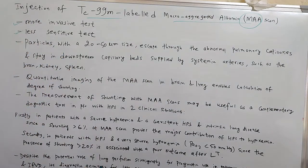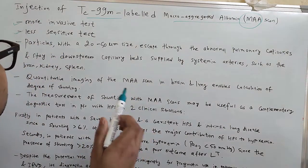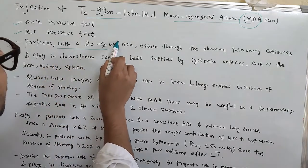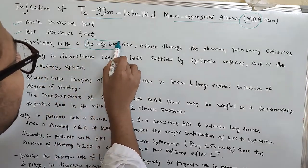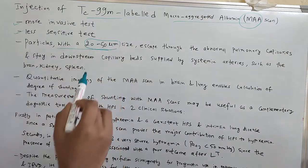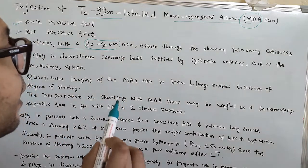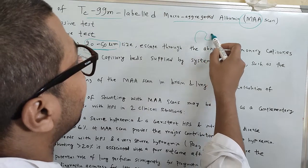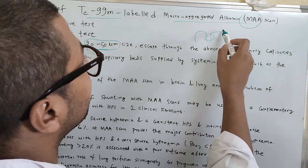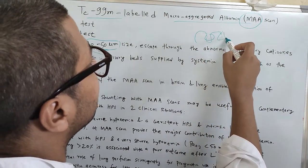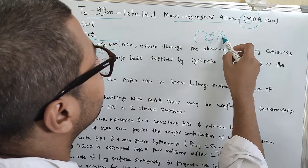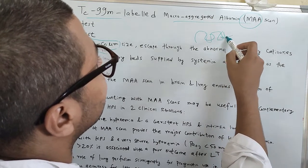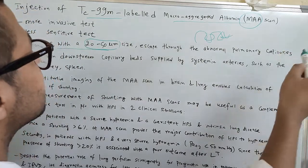In this test, particles with 20 to 50 micrometer size are injected and they pass through the venous circulation and reach the right heart, and from there it goes to the lungs. They pass through the pulmonary capillaries to post-capillaries and then to systemic circulation.